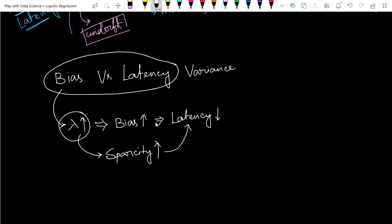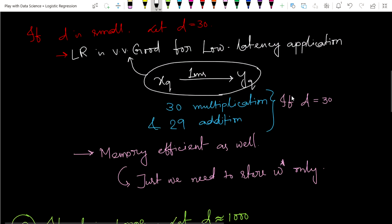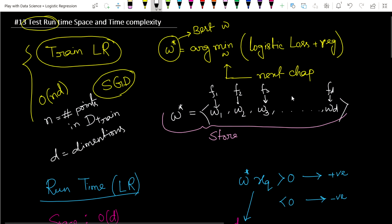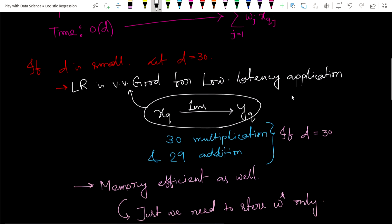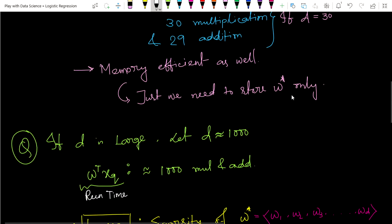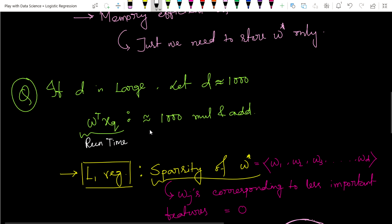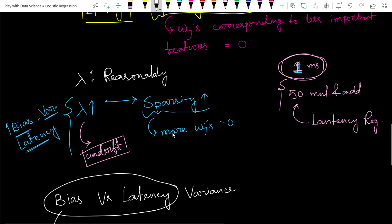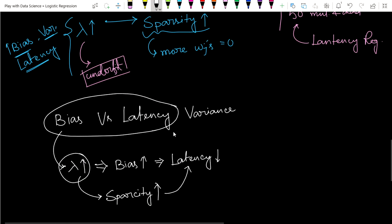We have to think about these things. I think the concepts of runtime and time-space complexity are now clear. After training this model, when we run it, we have to choose our hyper parameter such that our latency requirement is fully met and our bias and variance tradeoff is also well maintained.